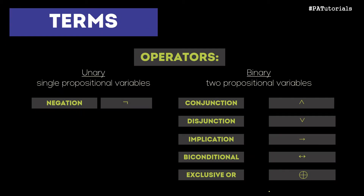In our previous lesson, we learned that we have two types of operators. The first one is unary and the second one is binary. Under unary, we have the negation symbol. While in binary, we have five different symbols: conjunction, disjunction, implication, biconditional, and exclusive or.